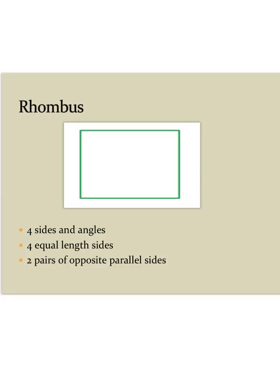Now, a rhombus has four sides and four angles. All four sides are the same, and it has two pairs of opposite parallel sides. Someone didn't get the message to put a rhombus on this slide. This is also not a rhombus. Someone's playing a joke on me. This is what a rhombus should look like. Kind of like a square turned to this side.